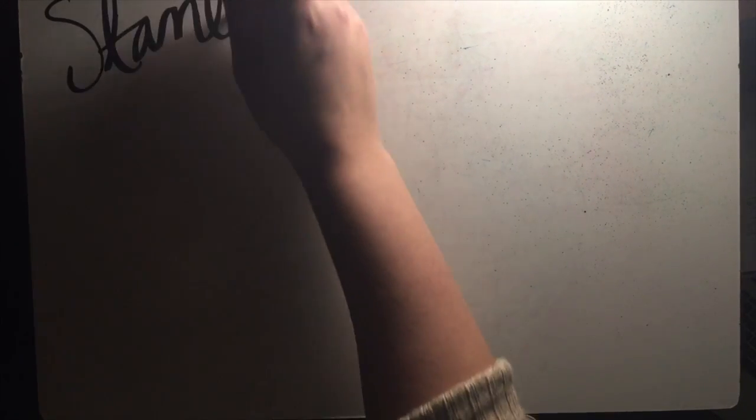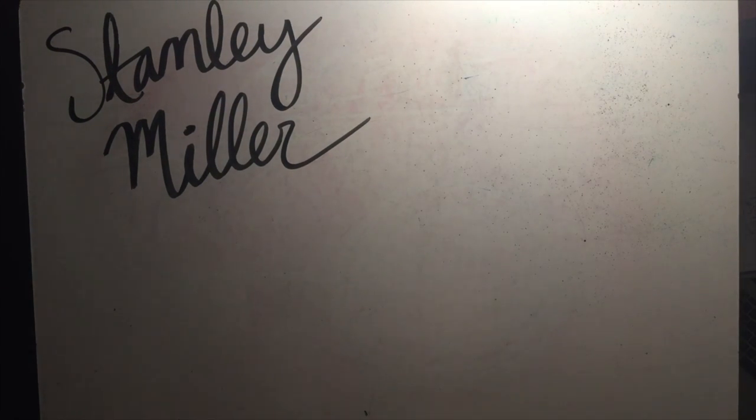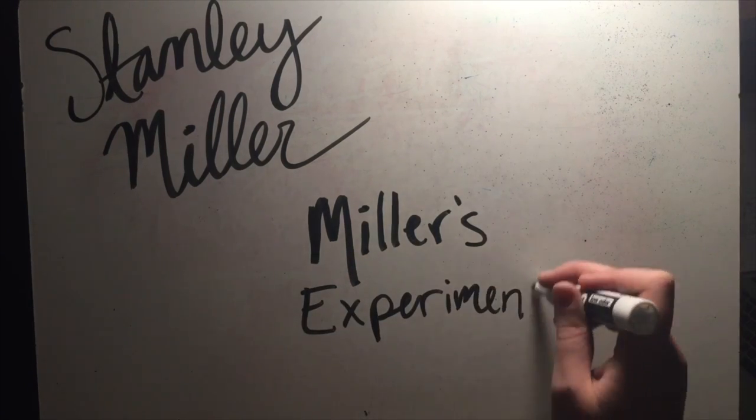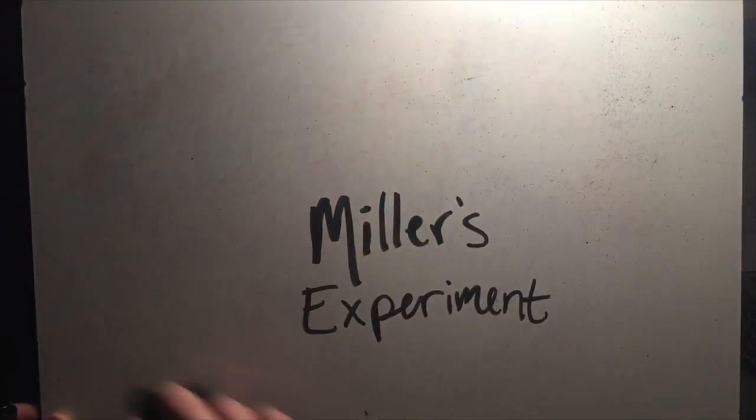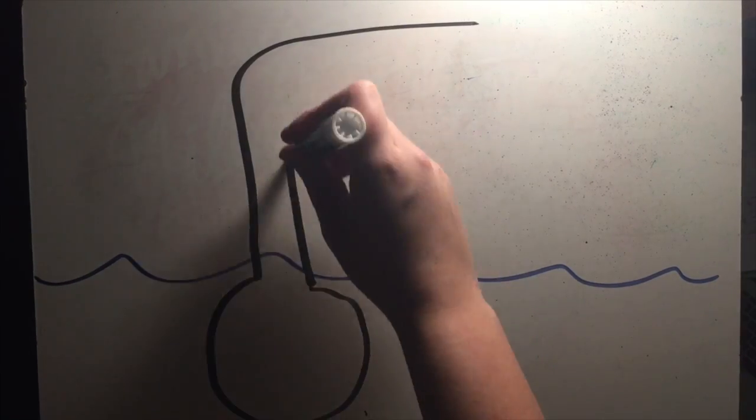One of the most influential experiments in the study of the origins of life was a bottom-up experiment conducted by Stanley Miller and Harold Urey in the 1950s. Unfortunately for Harry, today it's known as the Miller experiment. The experiment sought to replicate the conditions present on Earth at the time that life originated.